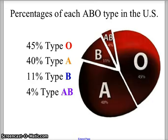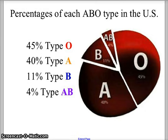Let's look at the population of blood types in the United States — it is slightly different universally. In the US, about 45% of the population has O type blood, 40% has A type blood, 11% has B type blood, and 4% has AB blood. Knowing your blood type is valuable so you know how much blood is available in the population if you were to need a transfusion.